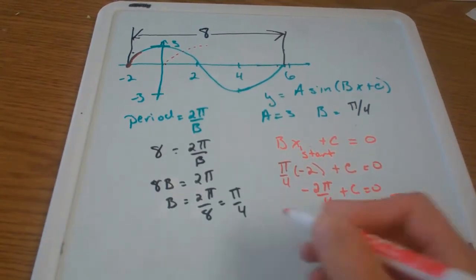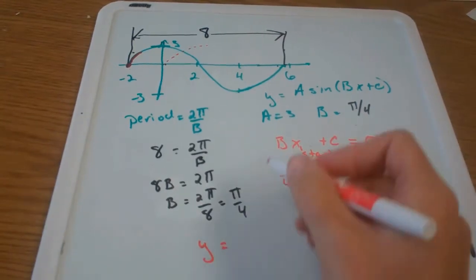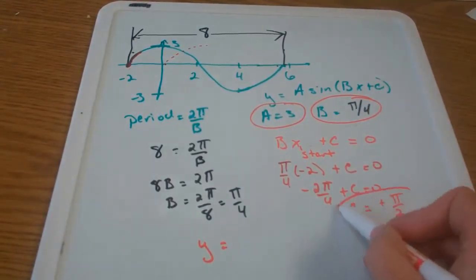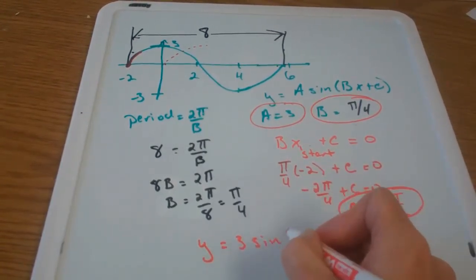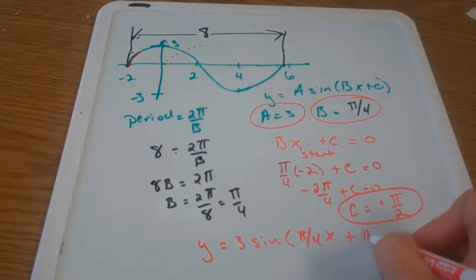I think I have my final answer here. I'm going to take all of these parts and put them together: y equals 3 sine of π over 4 x plus π over 2.